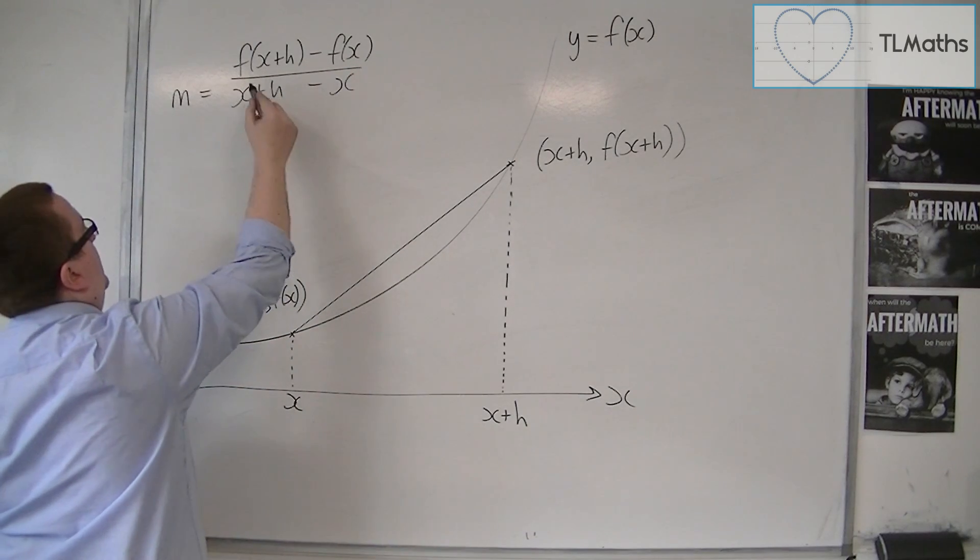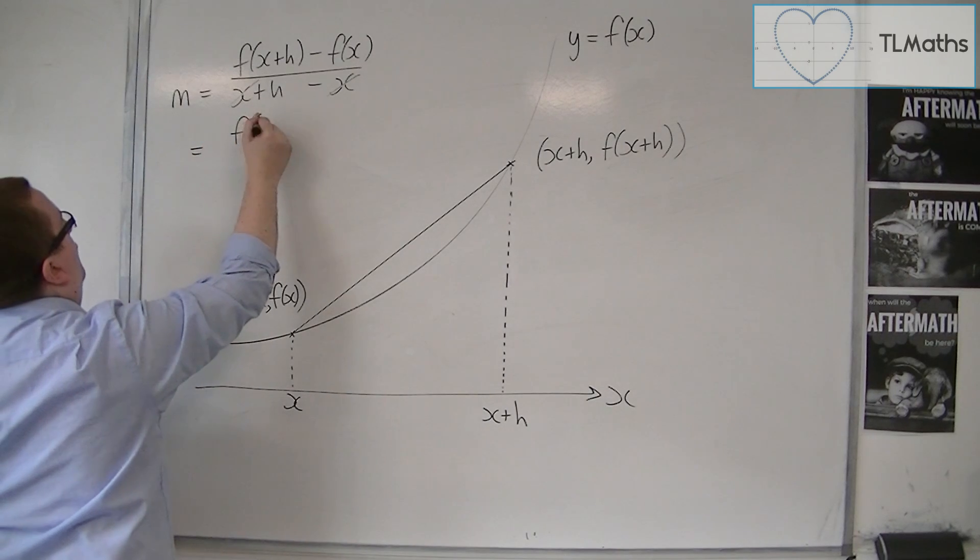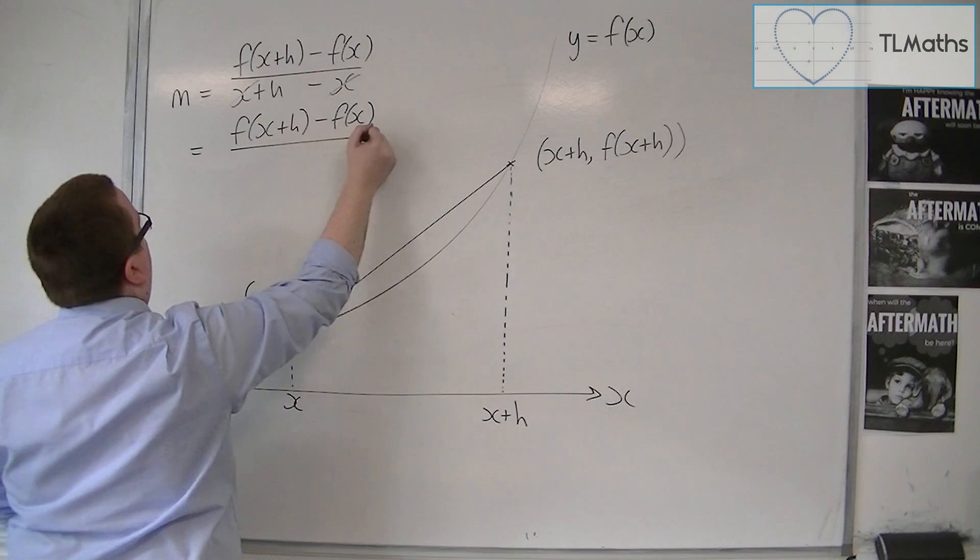Now we know that x plus h take away x, well the x's are going to cancel, and so I'd just be left with f of x plus h take away f of x divided by h.